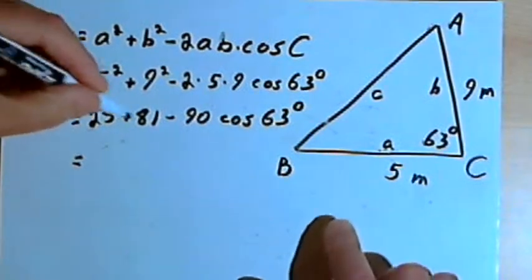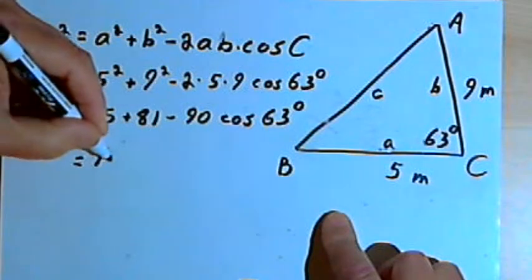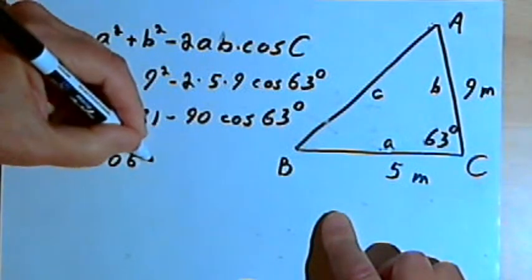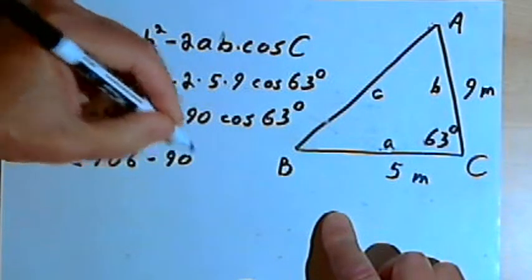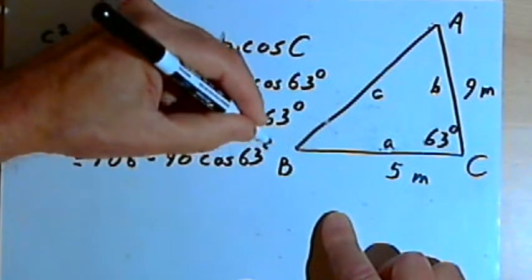Let's just add 25 and 81 before we go to the calculator. So 25 and 81 add up to 106 minus 90 times the cosine of 63 degrees.